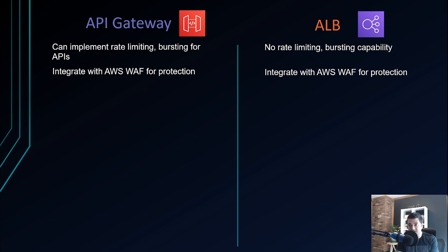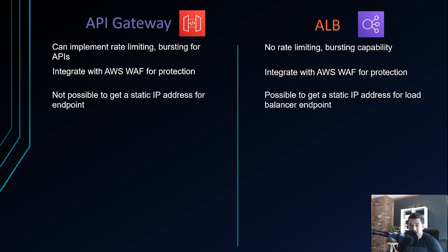Both API Gateway and Application Load Balancer integrate with AWS Web Application Firewall for protection out of the box — you just have to click a button.